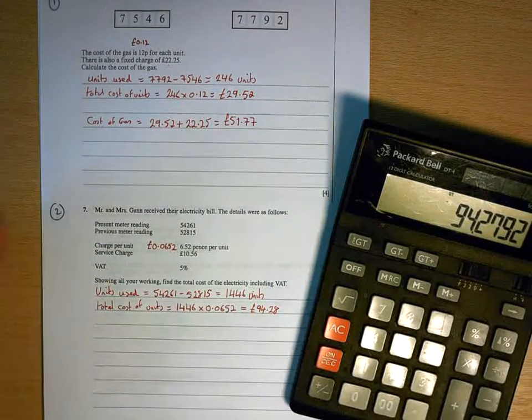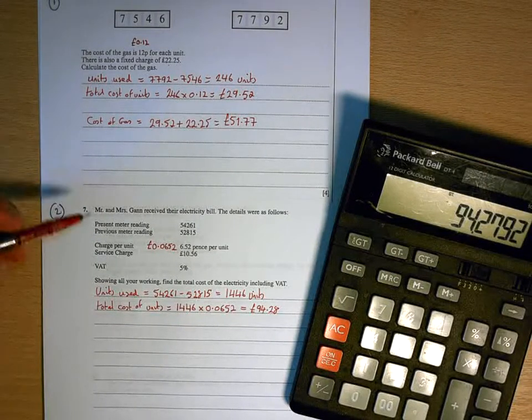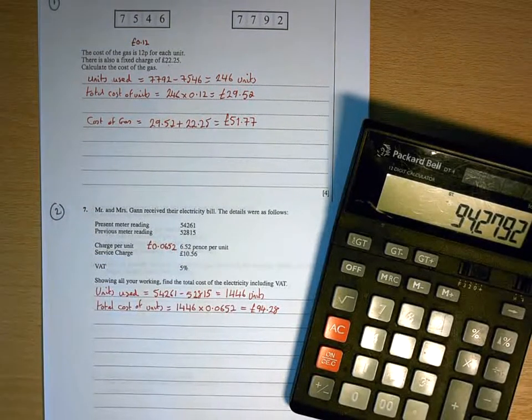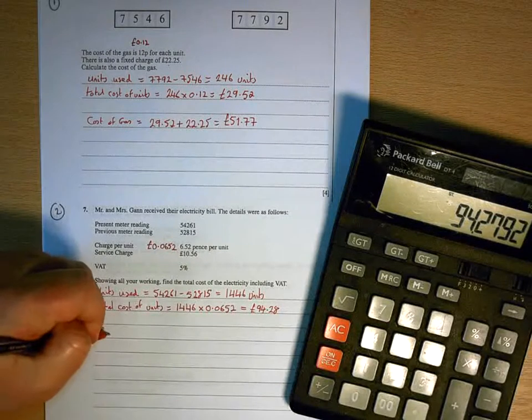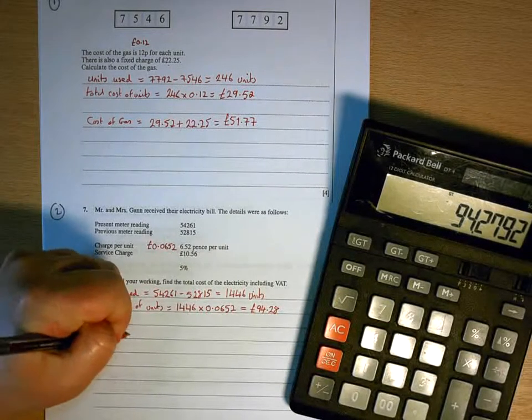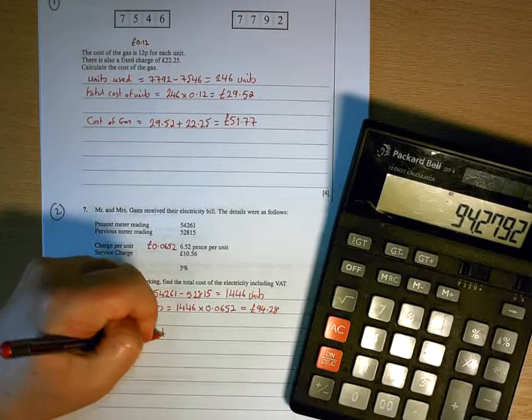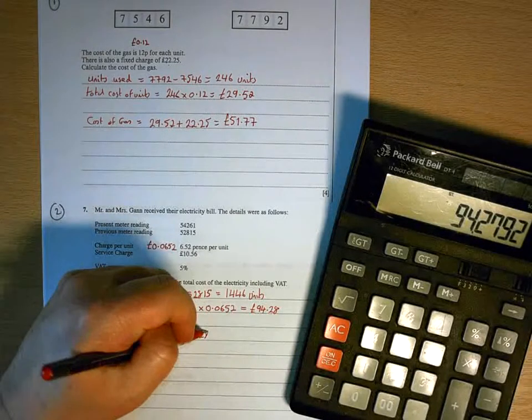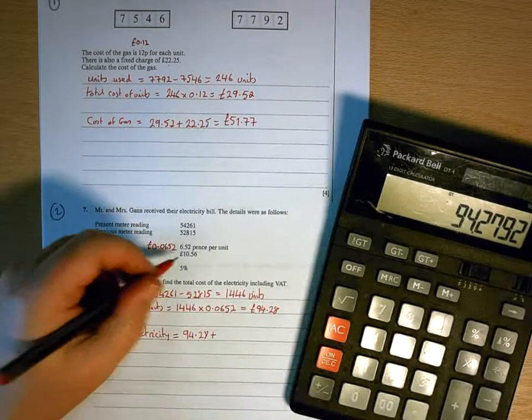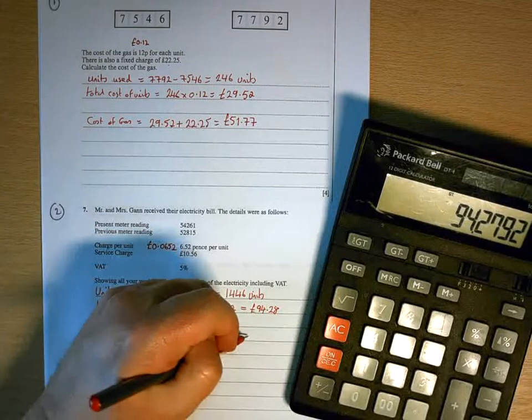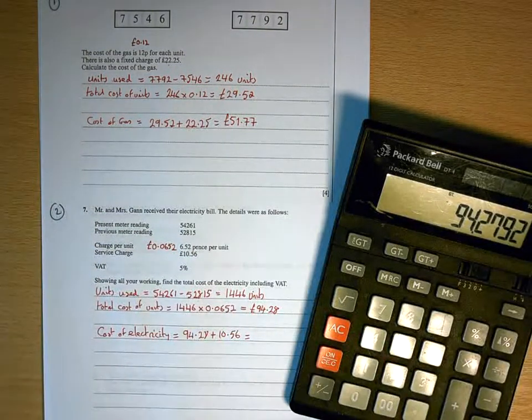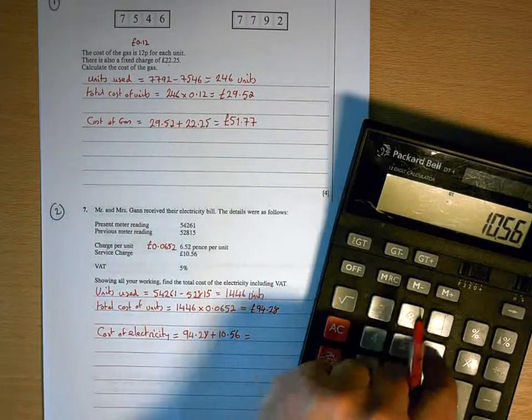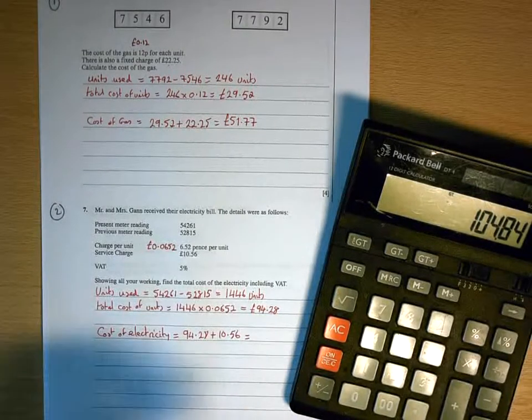Now we look at the additional charges that are going to be included. And again, with this question, it's just a flat service charge of £10.56. So the total cost of the electricity will be the £94.28 for the units that we've used plus the service charge of £10.56. So we're now going to add £94.28 and £10.56 to get £104.84.